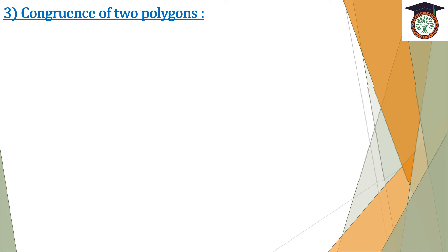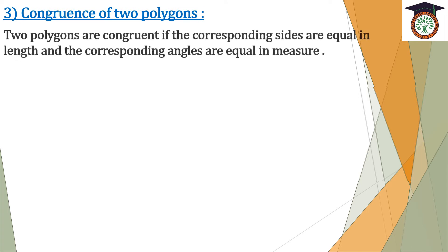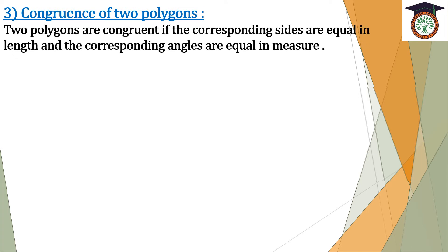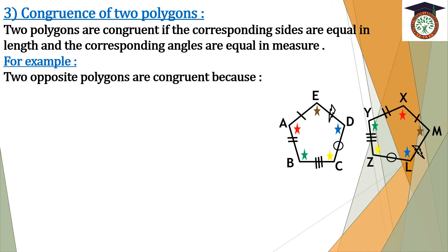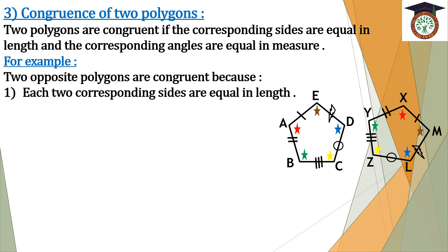Number three: congruence of two polygons. Two polygons are congruent if the corresponding sides are equal in length and the corresponding angles are equal in measure. For example, two opposite polygons are congruent. Here we have two polygons. The first condition is that the corresponding sides are equal in length.